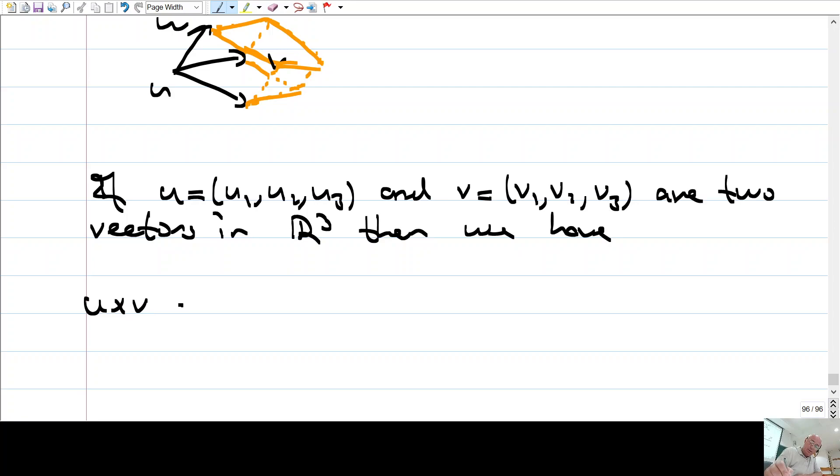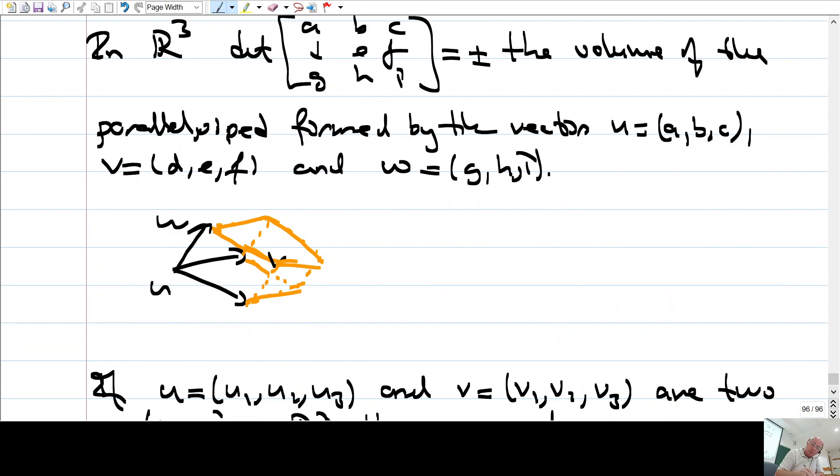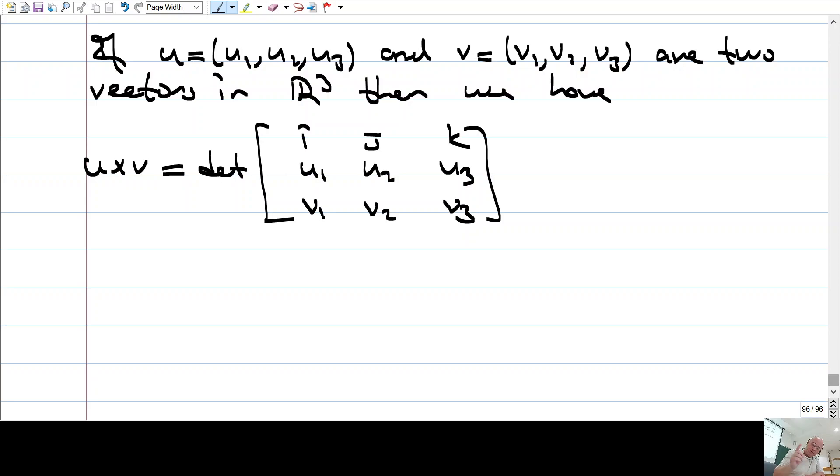U cross v is just the determinant of the following matrix. You put i, j, k here and then u1, u2, u3, v1, v2, v3. It is equal to this one, but I didn't tell you, okay, here I told you what is the determinant, but I didn't tell you what is the determinant in case of this 3 by 3 matrices.